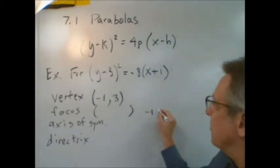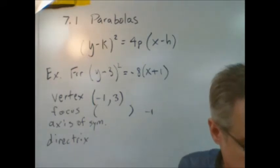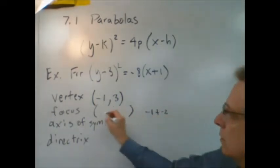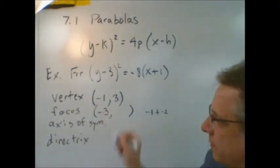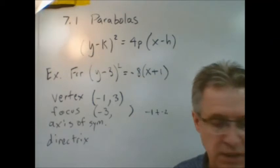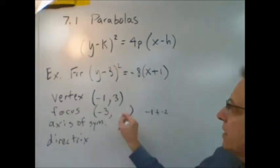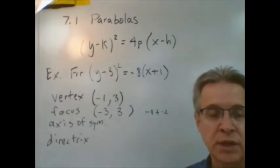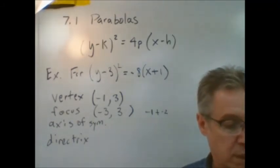So the focus is h plus p. So negative 1 plus negative 2, which is negative 3. And then comma k. So the focus is, see the k is 3. So the focus is at negative 3, 3. I'm just using the formulas on your equation sheet on the right side.